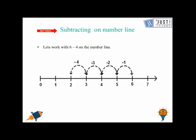Let's start from 6 because this is what we have at the first place. And how many jumps do we need to take? We need to take 4 jumps. And because it's subtraction, we'll take 4 steps backwards, that is in the left direction.